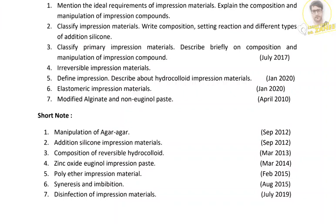Coming to the elastomeric impression materials, we have to write regarding polysulfide, polyether, addition silicone, and condensation silicone. Then coming to the next question, that is modified alginate and non-eugenol paste: we have to write what the modified alginates are and write regarding the non-eugenol paste.